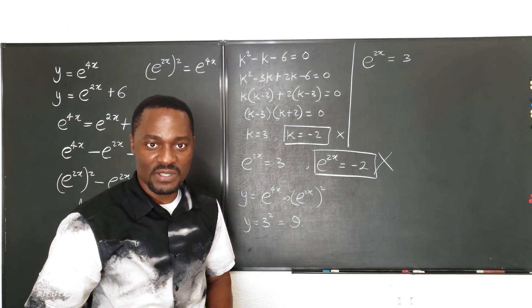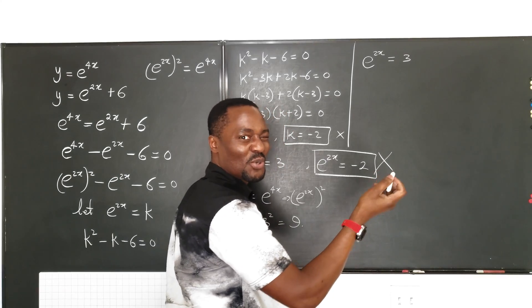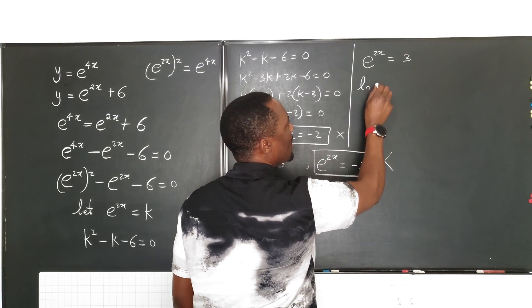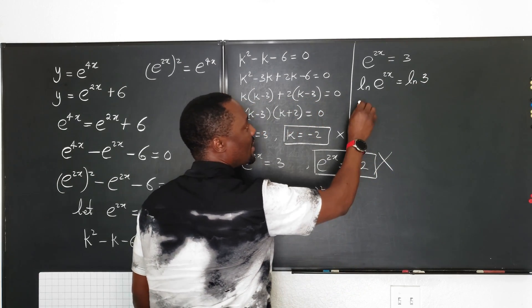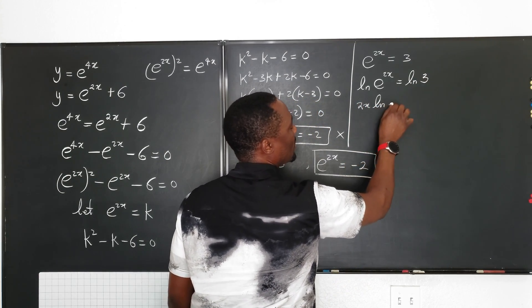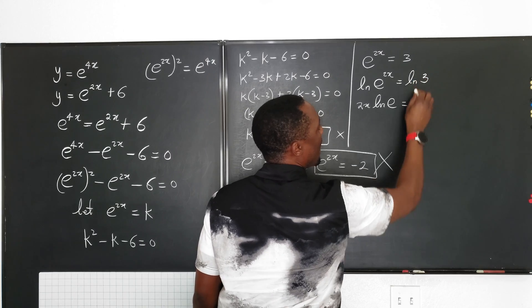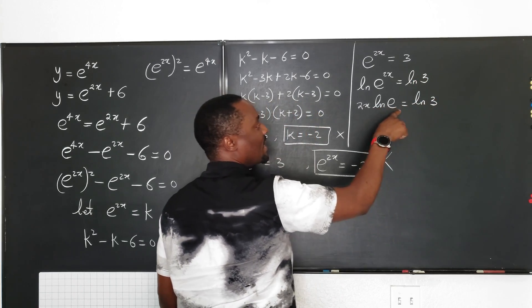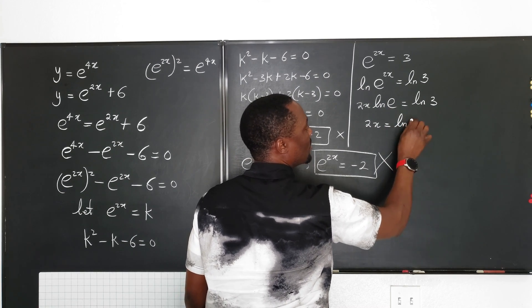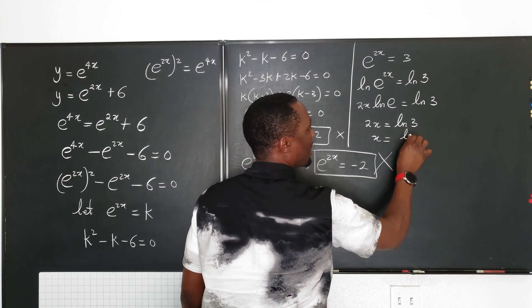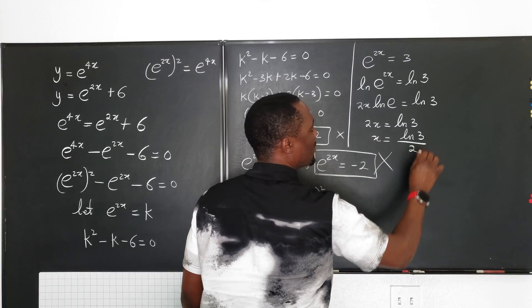What do we do? Let's take the logarithm of both sides, natural log this time, so it makes it easier. So the natural log of e to the 2x equals the natural log of 3, and then we can have 2x natural log of e equals natural log of 3. Well, we know the natural log of e is 1, so we end up with 2x equals natural log of 3, and x is natural log of 3 divided by 2.